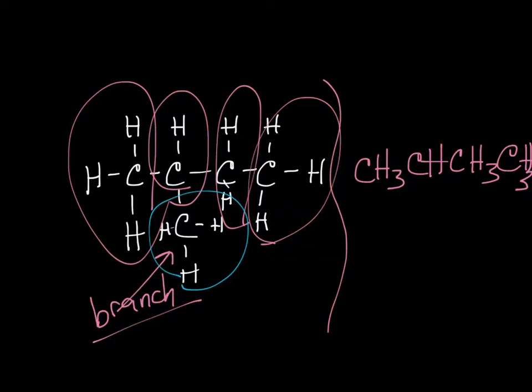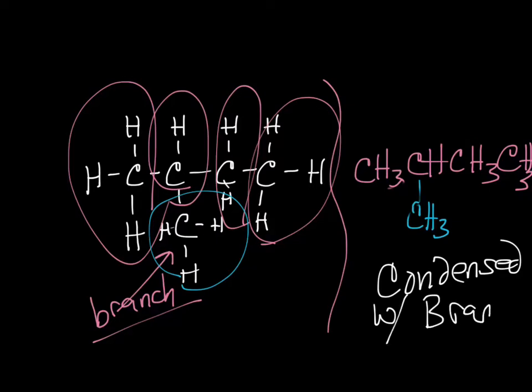All right, then we have to deal with this branch here. Well, he's connected to the second carbon, and he is CH3. All right, so here I am showing a bond, because the condensed formula shows the arrangement without the bonds, but the only way to show the correct arrangement when you have a branch is to put a bond there. Okay, so this would be the condensed formula when you have a branch. All right, that's it for today. Have a good one.